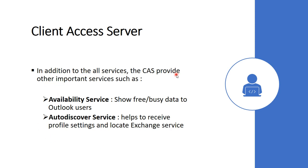In addition to these services, the Client Access Server provides other important services such as the Availability Service, which shows the free-busy data of a user — that is, whether a user is free or busy. For example, if you are scheduling a meeting, you will open a new email and type the email address of the user or the meeting room. Before sending, you can check the availability of that user or meeting room, which is provided by the Client Access Server.